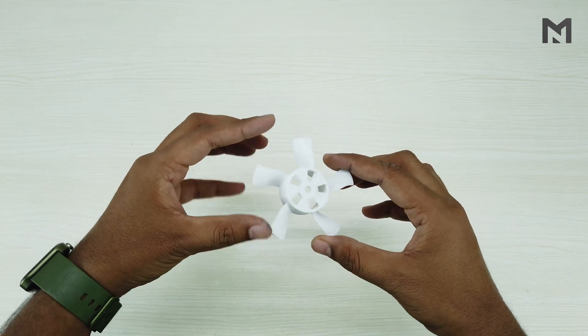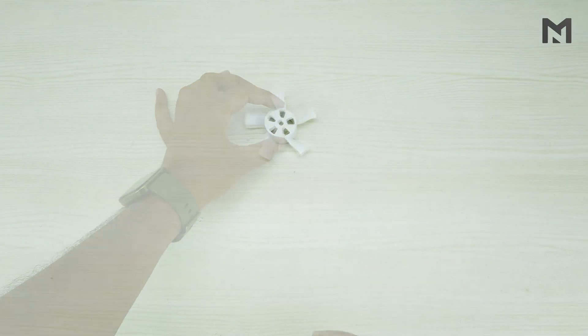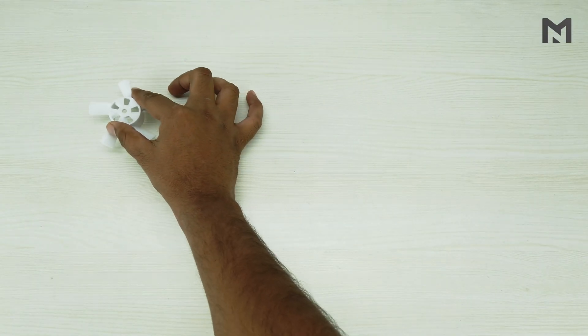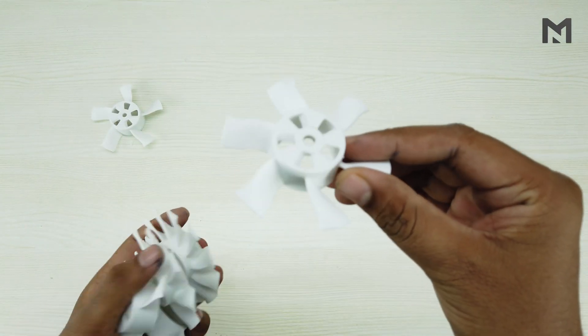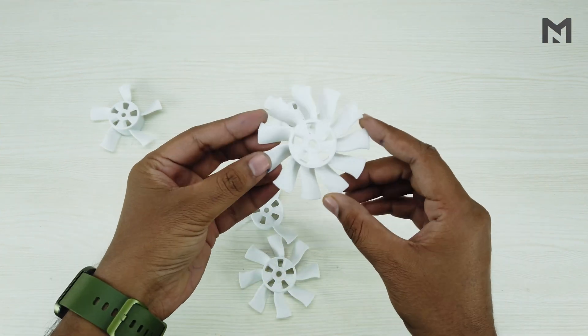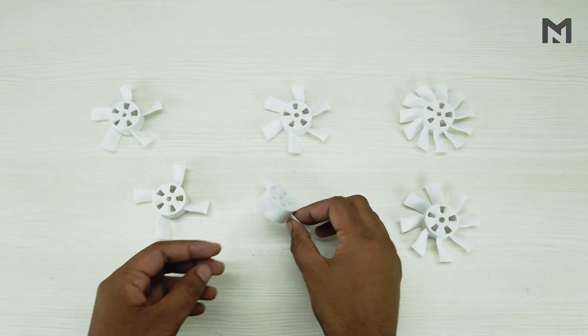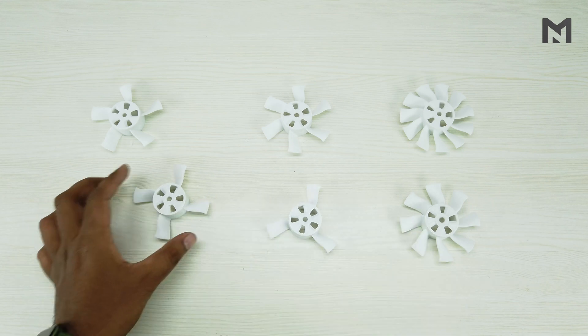If they are not smooth, trim the blade edges with sandpaper. I will be comparing 6 different propellers. Here is the 6 blade propeller, the 11 blade one, the 8 blade one, the 3 blade one and the 4 blade propeller.